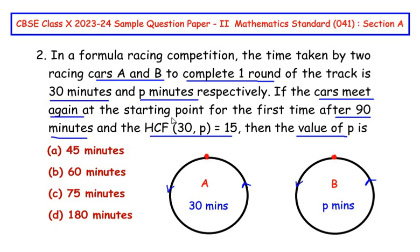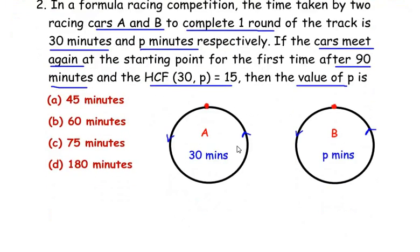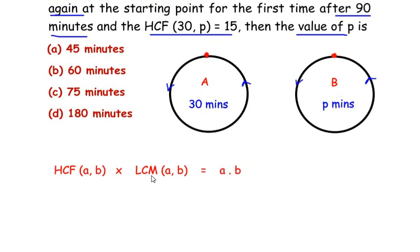Let us write down the formula connecting HCF, LCM and the two given factors 30 and p. So HCF of a comma b times LCM of a comma b is equal to the product of the two numbers a and b.